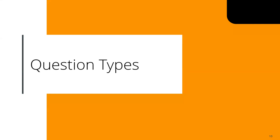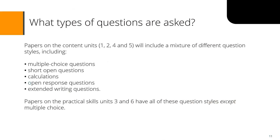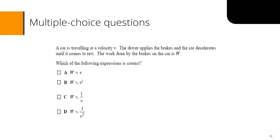Looking at question types used in the advanced level papers. Content units — units one, two, four and five — include a mixture of multiple choice, short open, calculations, open response and extended writing questions. Practical skills units — units three and six — have all of these except multiple choice. Over the next few slides I'll show an example of each of these five categories.